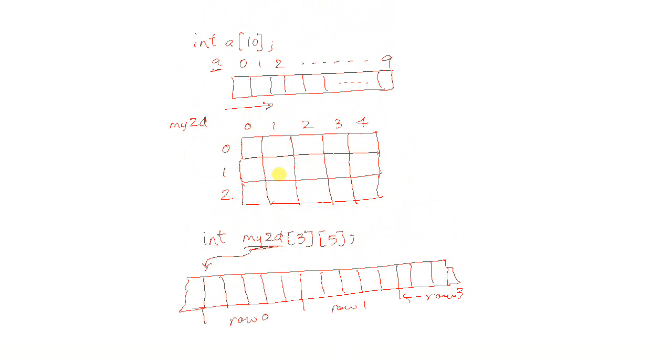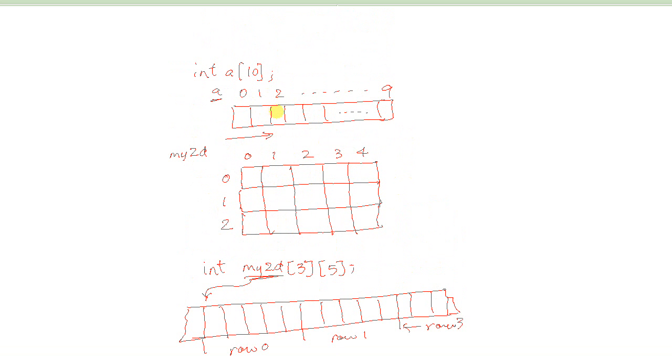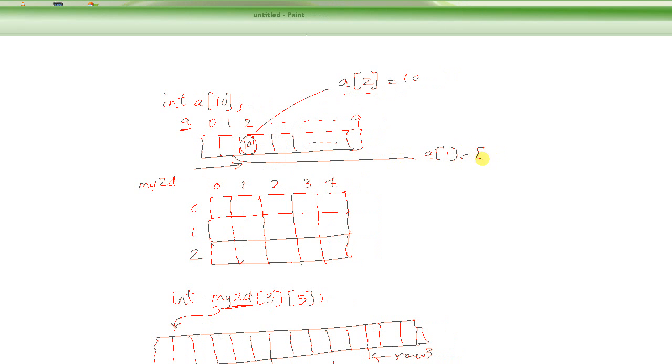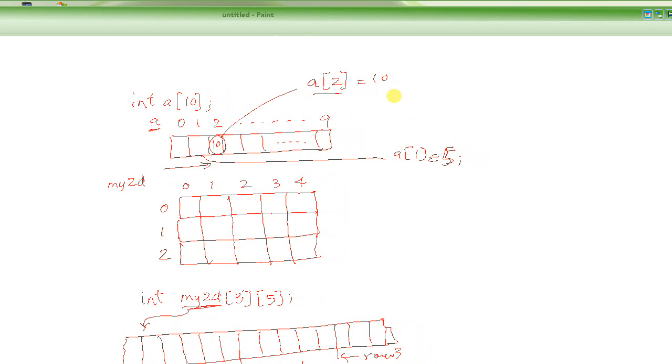Now, how to access the individual elements of two-dimensional array? How did we access individual elements of one-dimensional array? For example, this one, we know, if you had access this one, you have to use the subscript 2, which is the element number 2 here, for this array A. So, this is how you access. So, if you make it equal to 10, this actually stores 10 right here. And if you make this one equal to 5, this will actually store 5 here.